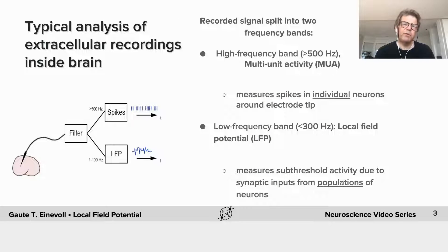So, the typical analysis of these extracellular recordings inside the brain has been to do this band filtering into a high-frequency band and a low-frequency band. The high-frequency band, maybe above a few hundred hertz, 500 hertz maybe, is sometimes called multi-unit activity because this measures spikes in the individual neurons around the electrode tip.